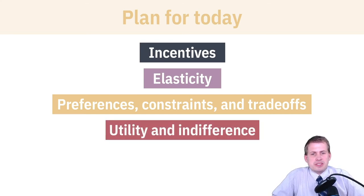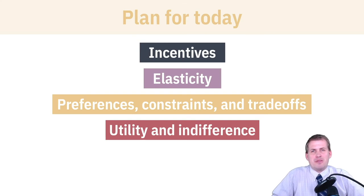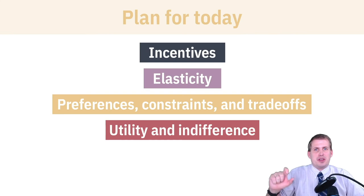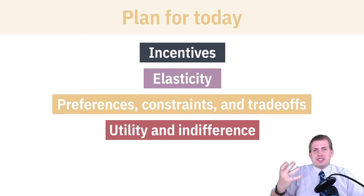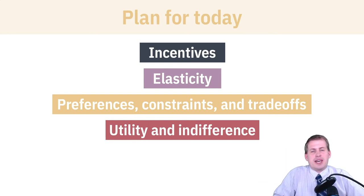Then we'll introduce this idea of utility, which is a way of thinking about happiness — essentially a way of measuring happiness with fake points, kind of like the game theory payoffs we've been talking about with the different numbers placed in the squares. Those are all just made-up numbers, and utility is also essentially a made-up number. Everybody has their own measures of utility, but it still gives us a way of explaining why people make the decisions they do and how you can maximize your happiness.